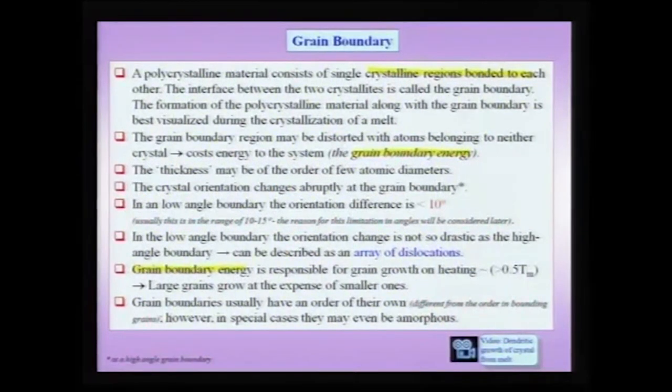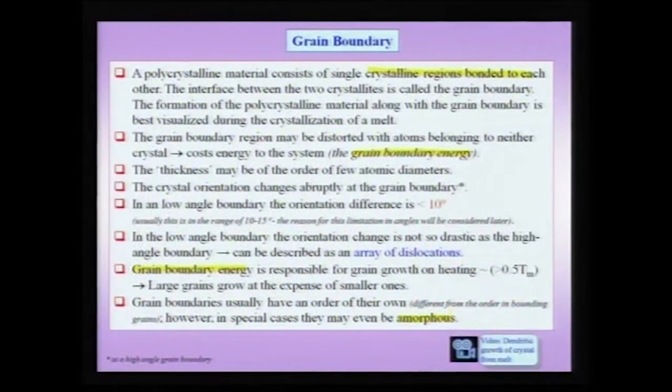Grain boundary energy is an important quantity responsible for grain growth, which takes place when you heat a material typically above about 0.5 Tm. During grain growth, larger grains grow at the expense of smaller grains, and at the end of the grain growth process the average grain size is larger than what you started with. Grain boundaries do not have the same order as either of the bounding grains, but they can have an order of their own. Hence grain boundaries are not typically amorphous, but in very special cases grain boundaries could be amorphous.